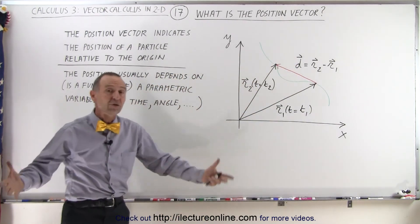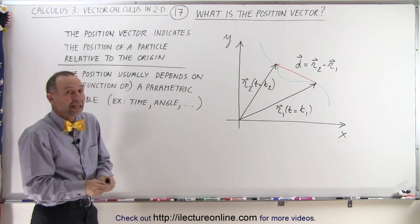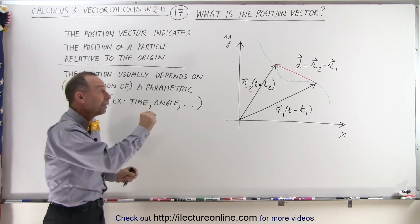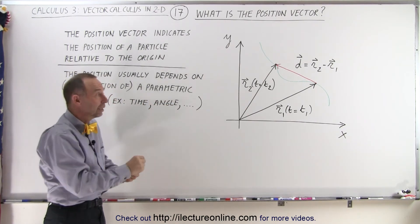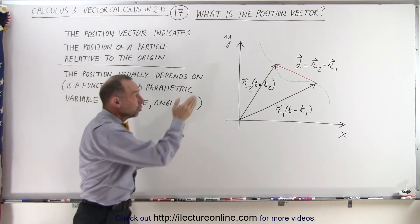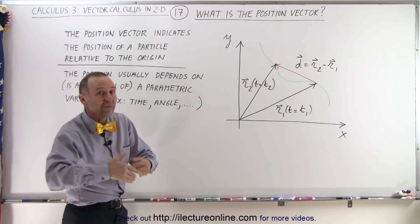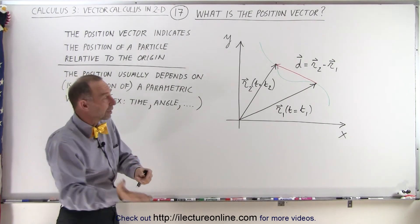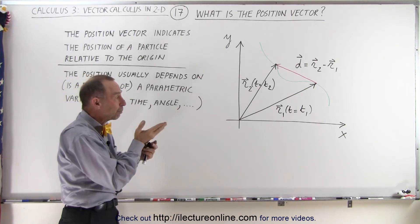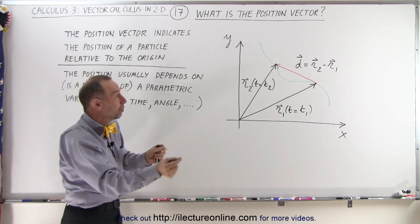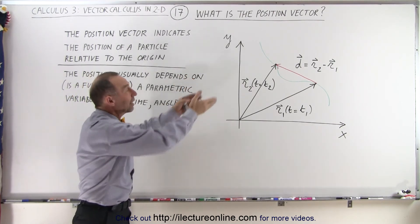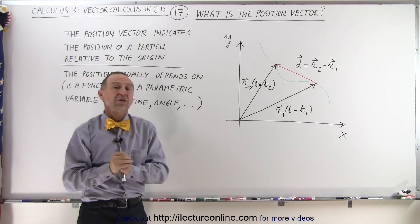So now you know what a position vector is. It's simply a vector that indicates where something is at, a point, a particle, whatever, from the origin to that point, so it's relative to the origin, and it's usually going to depend on some variable, like time or angle or something like that, so you can see that as that parametric variable changes, the position of the particle changes, and that's how you keep track of where that particle is at.